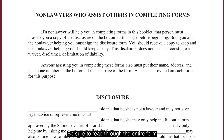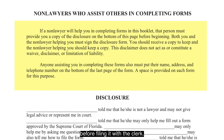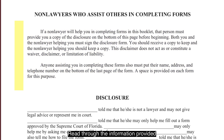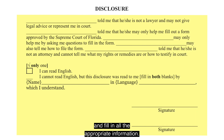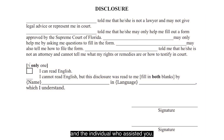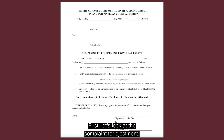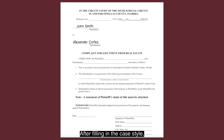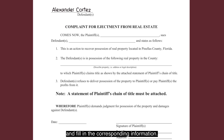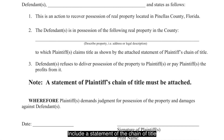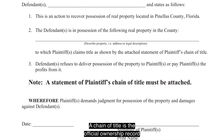Be sure to read through the entire form before filing it with the Clerk. Read through the information provided and fill in all the appropriate information. The form must be signed by you and the individual who assisted you. Now let's look at the complaint for ejectment. After filling in the case style, read through the entire form and fill in the corresponding information. Include a statement of the chain of title to the complaint. A chain of title is the official ownership record of your property or asset.